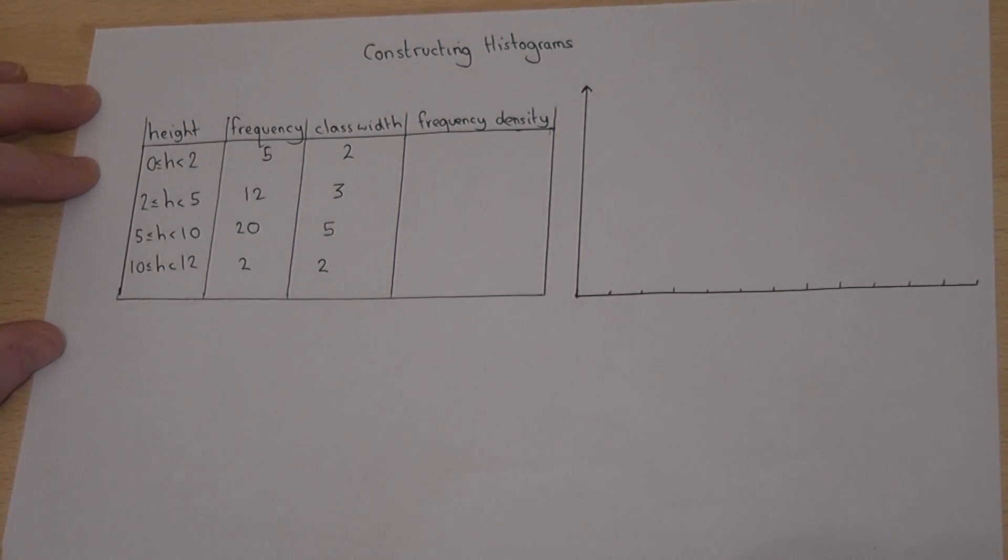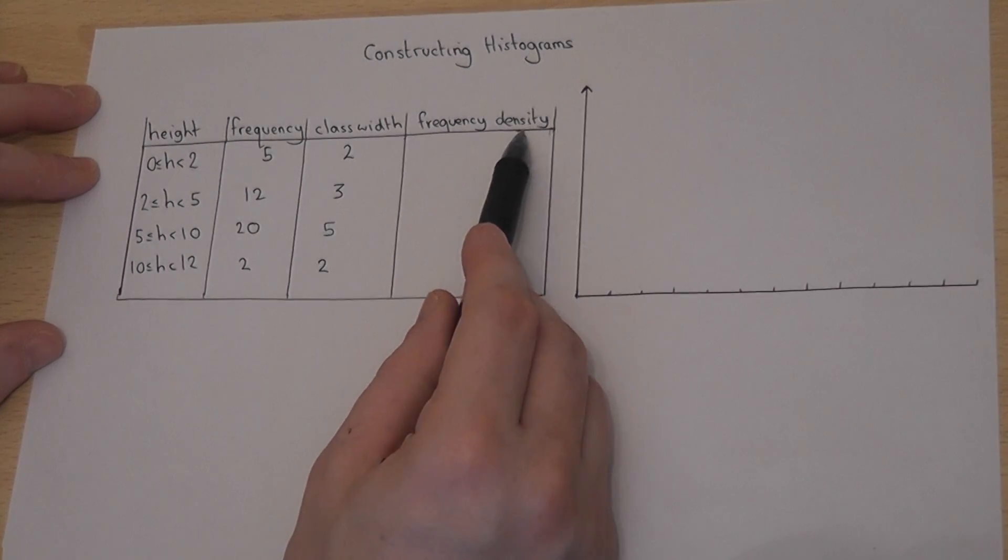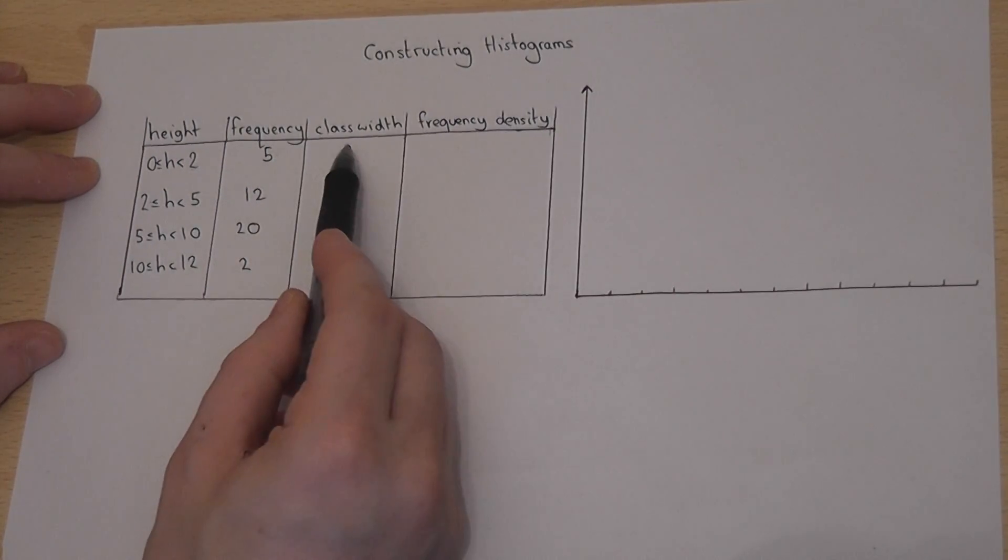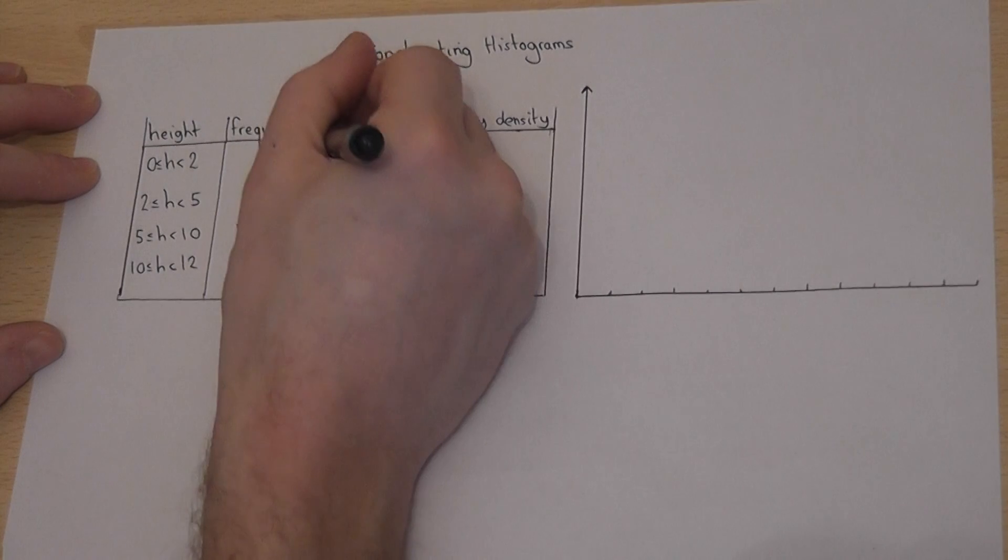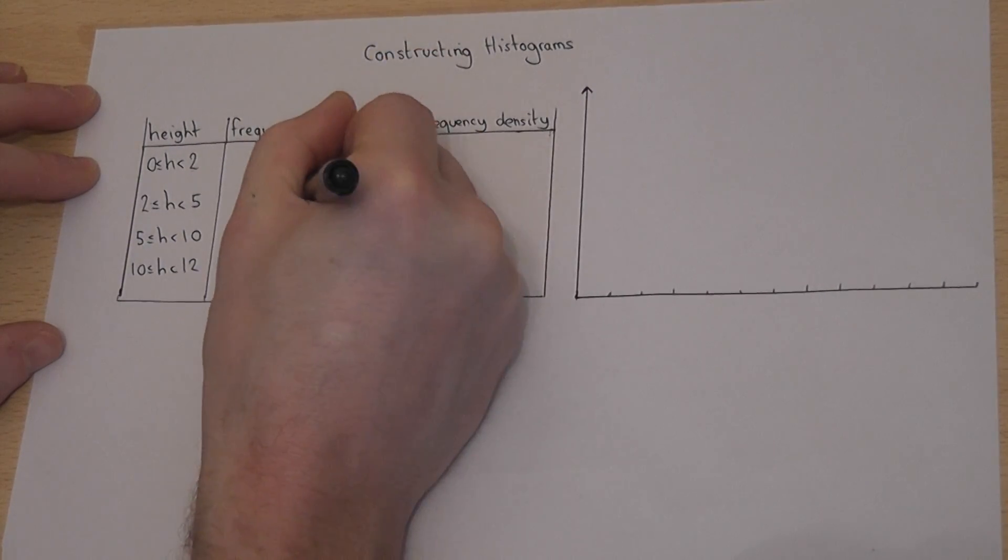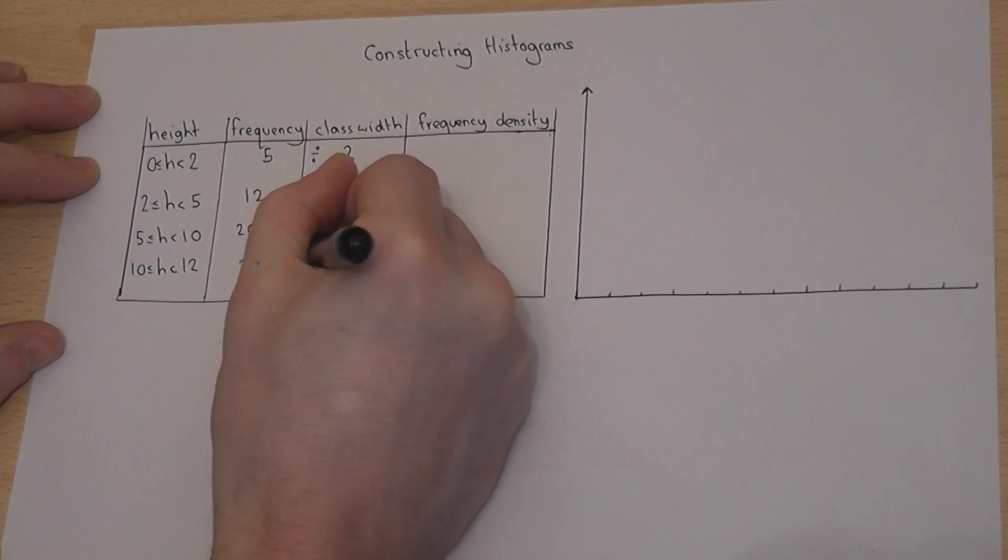To work out the frequency density we simply do frequency divided by class width. So I imagine a string of divide signs down through the table.